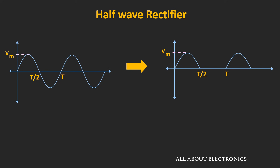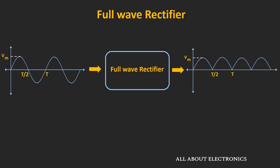So if we can somehow use this other half of the input signal, then we can increase the average value of the output signal. And that is possible using the full wave rectifier circuit.